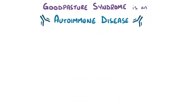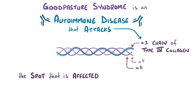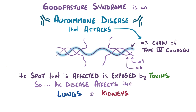As a quick recap, Goodpasture syndrome is an autoimmune disease in which the immune system attacks the alpha-3 chain of type-4 collagen present in the basement membrane. The specific spot that gets affected is usually well hidden but gets exposed by various toxins, which is why the disease predominantly affects the lungs and kidneys, causing symptoms like hemoptysis and hematuria.